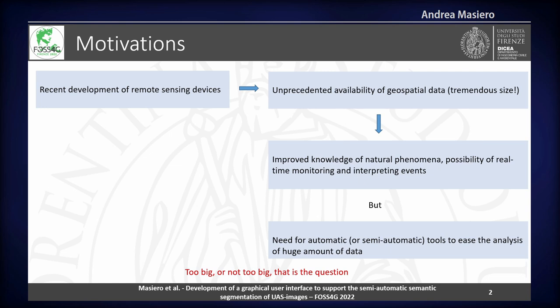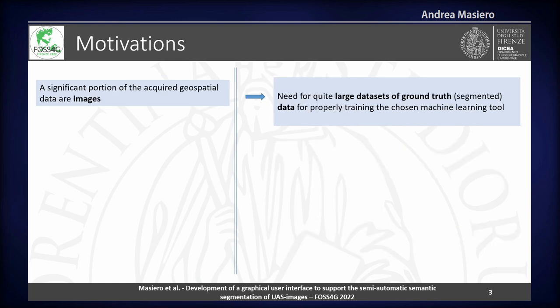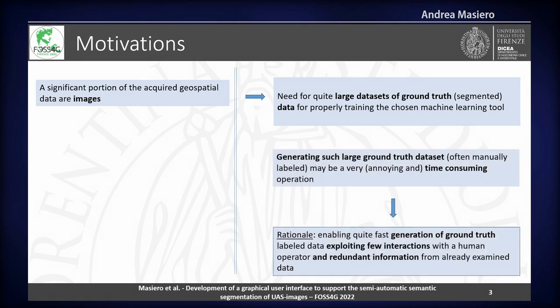So here we also have a question: too big or not too big, that is the question. A lot of our data can actually be thought of as images, or rasters, but the point is that since we typically use artificial intelligence tools — machine learning and deep learning — in order to analyze these images, we typically need quite large datasets in order to properly train these tools.